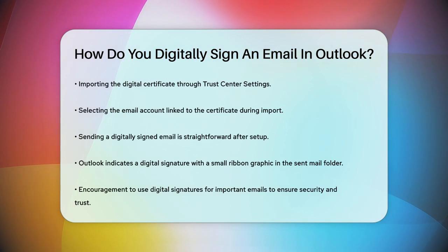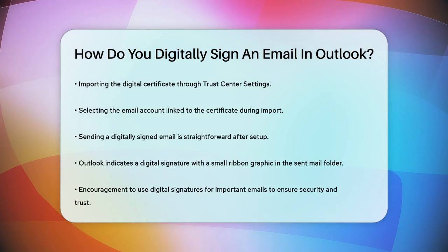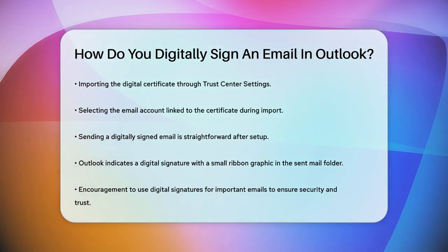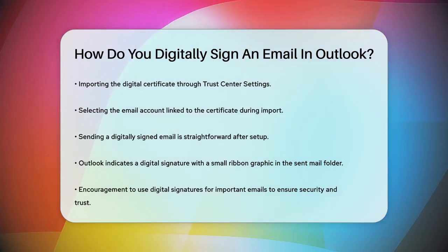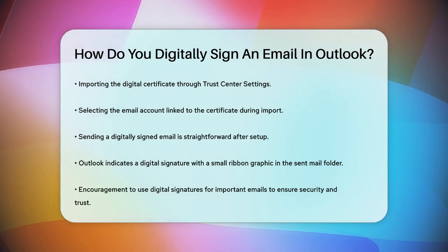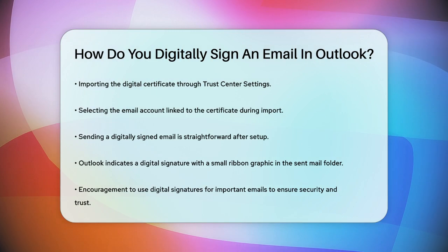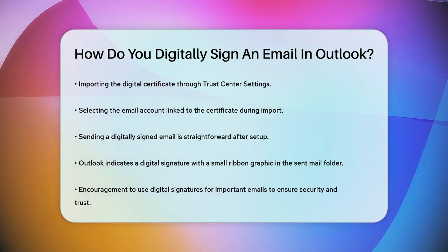Once you've set this up, sending a digitally signed email is straightforward. When you send an email, Outlook will automatically add your digital signature, indicated by a small ribbon graphic in your sent mail folder. This way, you can be sure that your emails are secure and trusted by your recipients. So the next time you need to send an important email, consider adding a digital signature to ensure its integrity and authenticity.